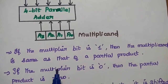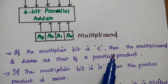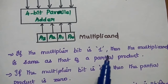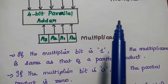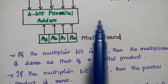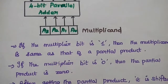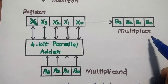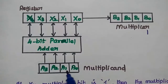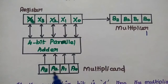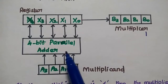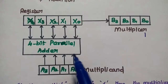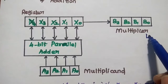If the multiplier bit is 1, then the multiplicand is the same as the partial product. If the multiplier bit is 0, then the partial product is 0. So if the multiplier bit is 1, whatever values are stored in the multiplicand register (the A register), we keep those values as such — 1 multiplied with the multiplicand gives the same multiplicand as the partial product.